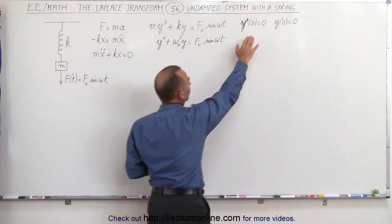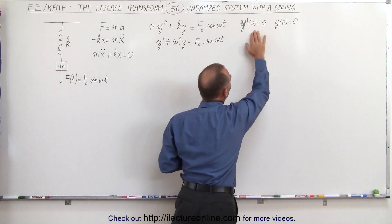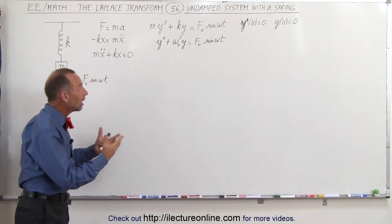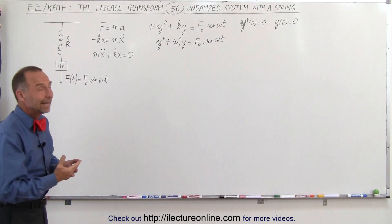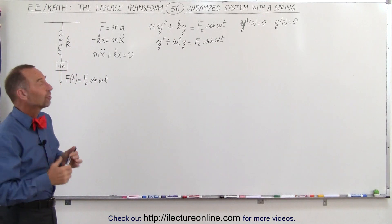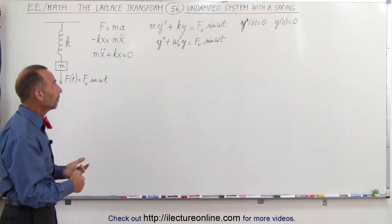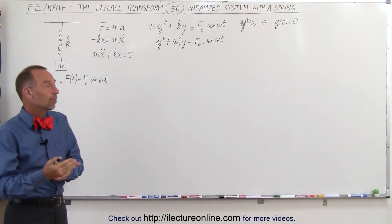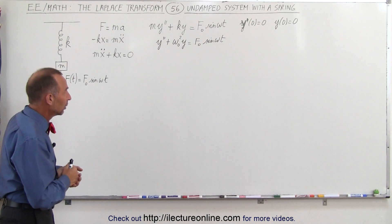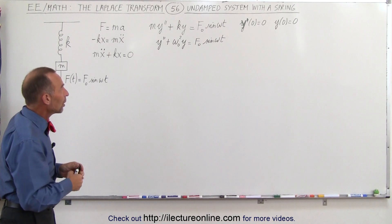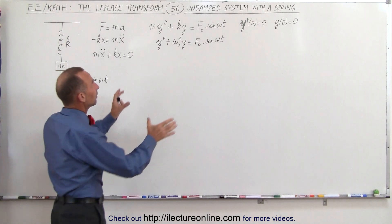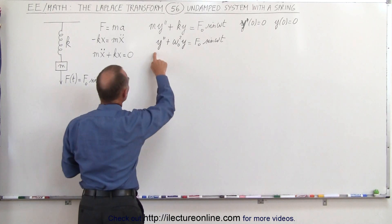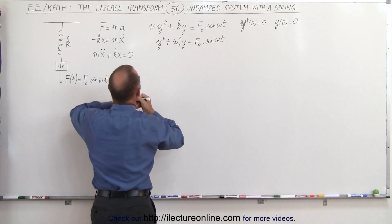Notice we also have some initial conditions, but they're equal to zero, which makes the problem a little easier. So now we go ahead and try to solve this problem using the Laplace transform — this is called the undamped system with a spring. The first thing we want to do is take the Laplace transform of both sides of the equation, and when we do that we get the following.